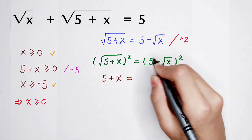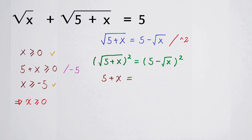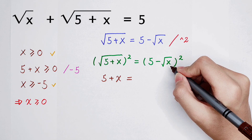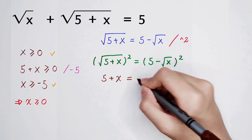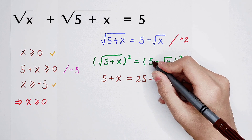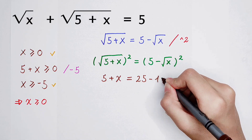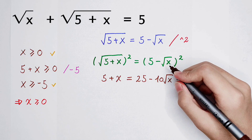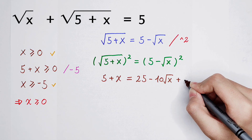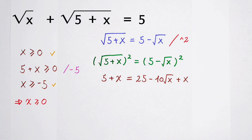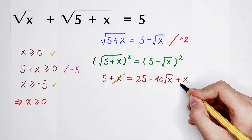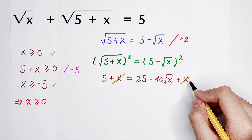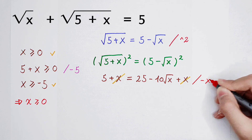On the right side, we use the second binomial formula: (a minus b) squared equals a squared minus 2ab plus b squared. So we get 5 squared which is 25, minus 2 times 5 times square root of x which is 10 times square root of x, and then plus square root of x squared which is x. Since x appears on both sides, we can cancel them out.